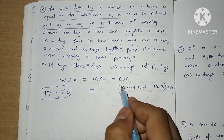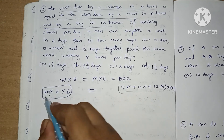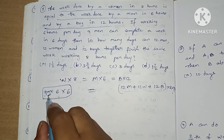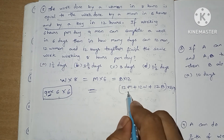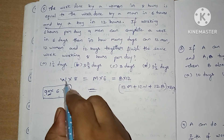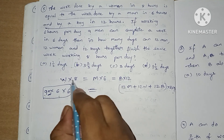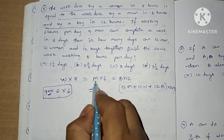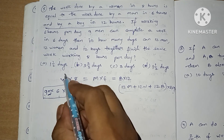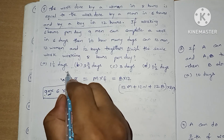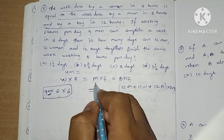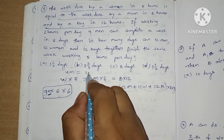We can convert them into men. 8 women equals 6 men, so 4 women equals 3 men.